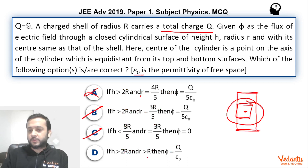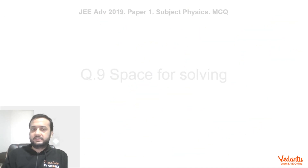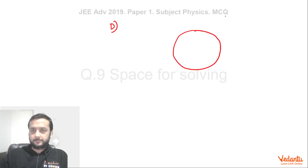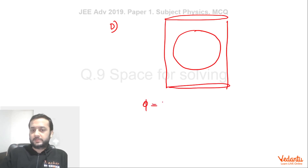Option D: if h > 2r and the cylinder radius R > r, this clearly implies that the whole shell lies inside the cylinder. Hence the flux will be q/ε₀ because the total charge inside the cylinder is q.